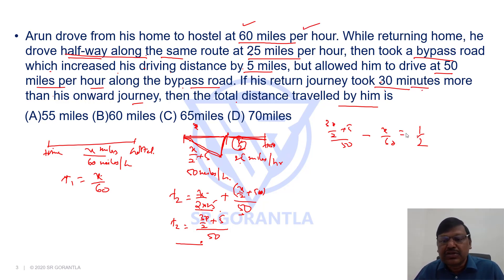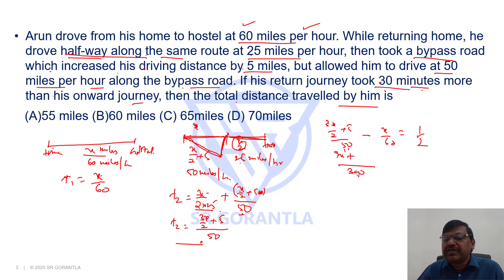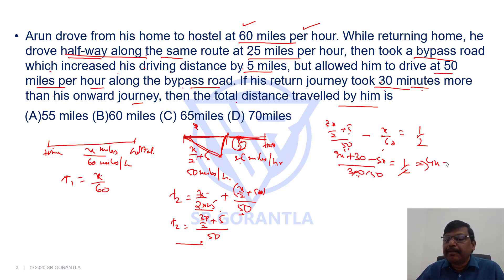Taking LCM of 50 and 60, the LCM is 300. 50 goes 6 times: 6 into 3x by 2 is 9x, plus 6 into 5 is 30. 60 goes 5 times: 5x. So 9x plus 30 minus 5x equals 150. Simplifying: 4x plus 30 equals 150, so 4x equals 120, giving x equals 30.